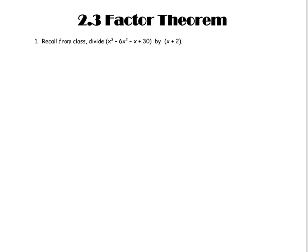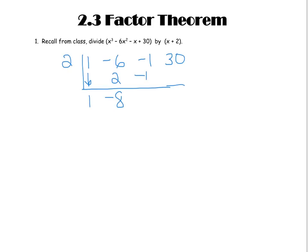The first thing we're going to do is divide this polynomial by x plus 2. We'll set that up and use synthetic division since it's a nice simple binomial, and it's a lot faster that way. We put our positive 2 up front, bring down our 1. 1 times 2 is 2, negative 6 minus 2 is negative 8, negative 8 times 2 is negative 16, negative 1 becomes plus 16, which is 15, 2 times 15 is 30, and that gives us our remainder of 0.